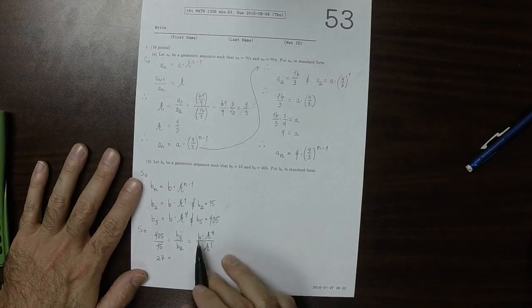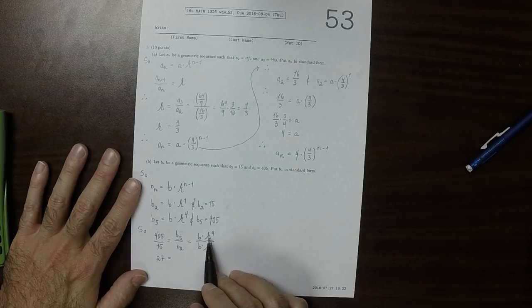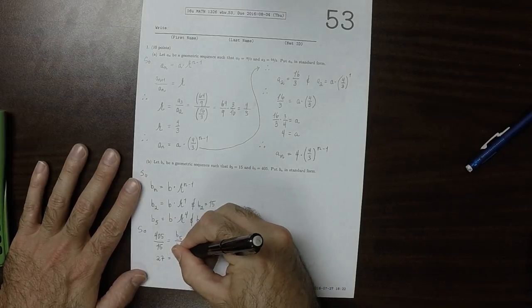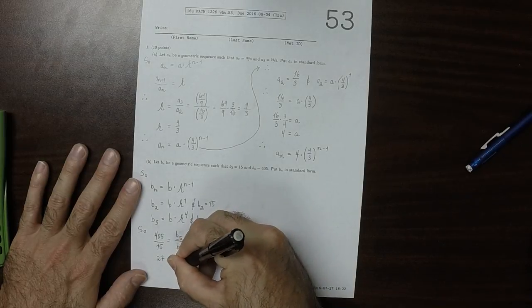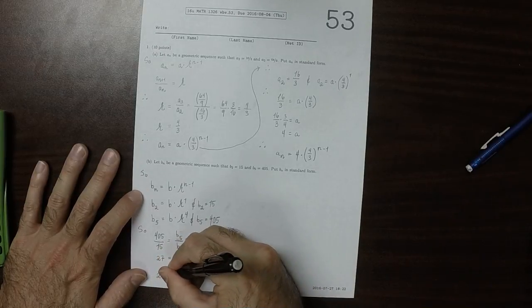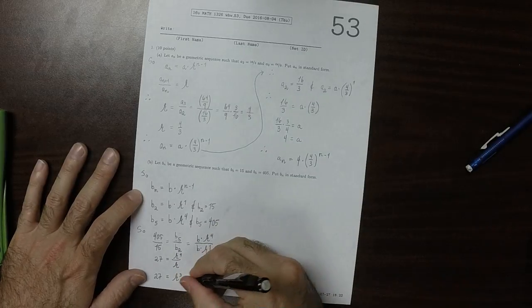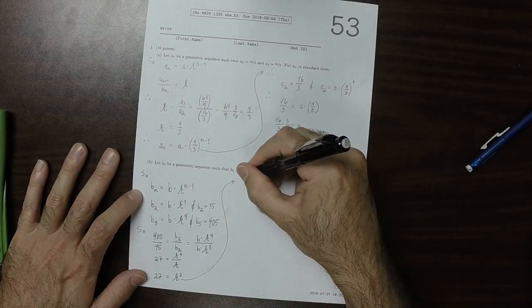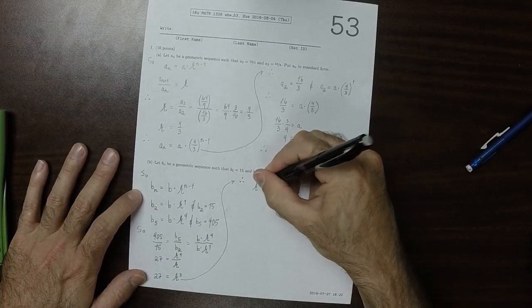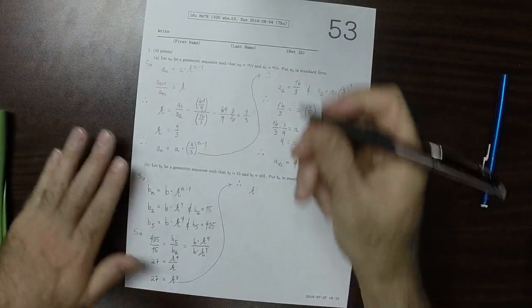Now notice, the b's cancel. The b's cancel, and you have r to 4 divided by r. So then 27 is r cubed. And therefore, we have that r is equal to 3, because that's the cube root of 27.